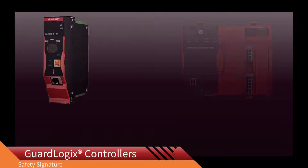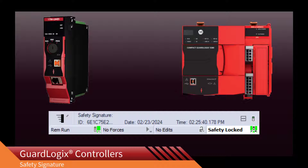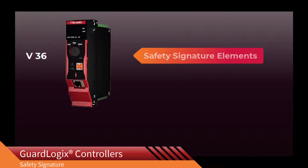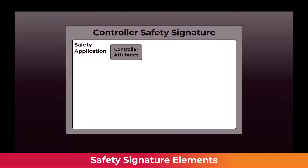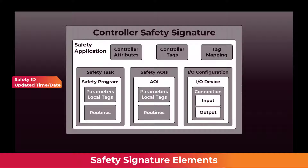The GuardLogix system uses a safety signature to verify the integrity of a safety application. GuardLogix version 36, released in 2023, introduced safety signature elements. Safety signature elements divide the GuardLogix safety controller signature into smaller pieces and assign each piece a safety ID and an updated time and date.